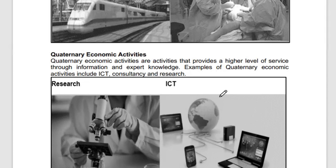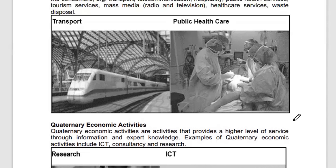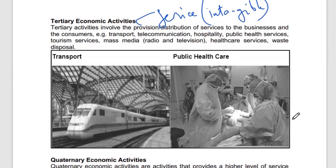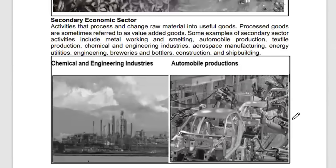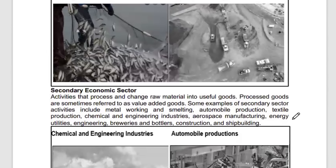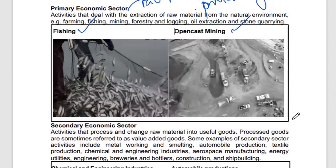You can assess the level of development of a country by looking at employment statistics across sectors. A developed economy has more people employed in tertiary activities — service provision. A developing economy shows employment biased towards the primary sector, with more people doing primary economic activities. This is how you can determine a country's level of development using employment figures across different sectors.